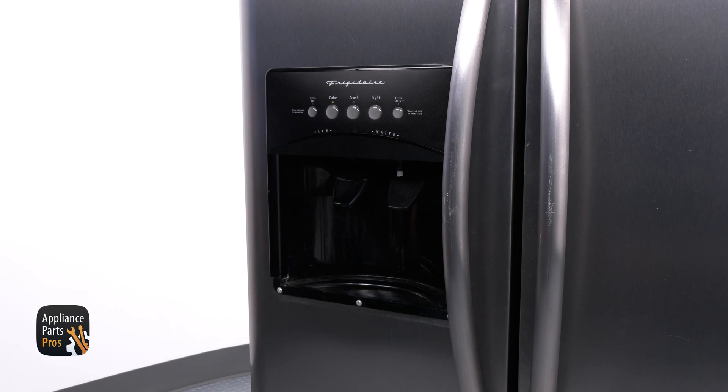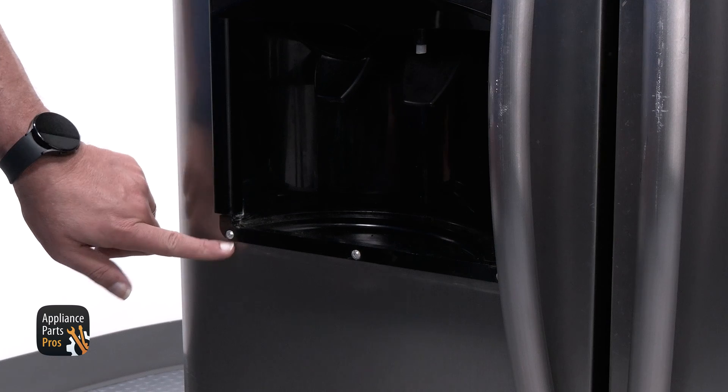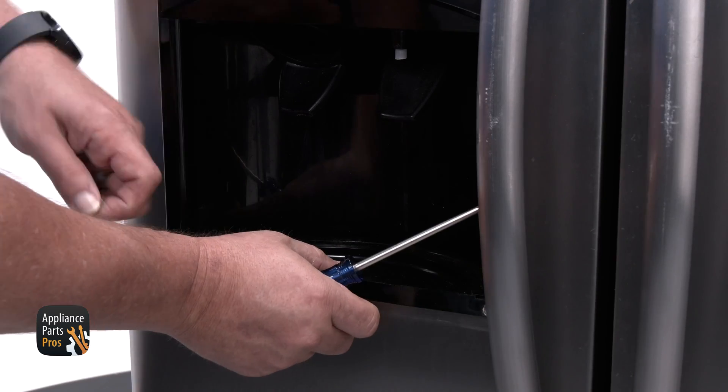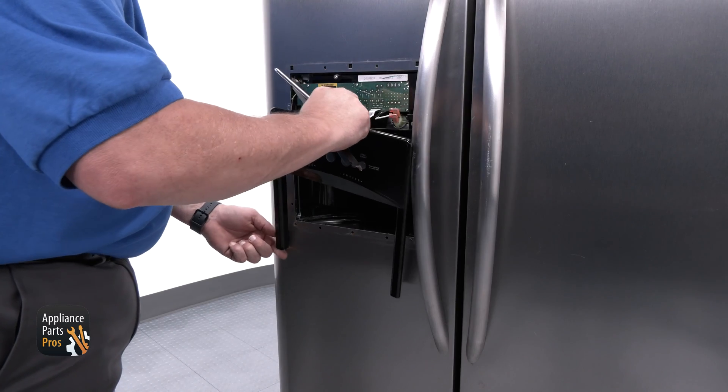First, we need to remove the dispenser tray from the dispenser assembly. There will be three screws under the tray on the front that need to be removed. Once you have the screws removed, you can lift the dispenser cover off.